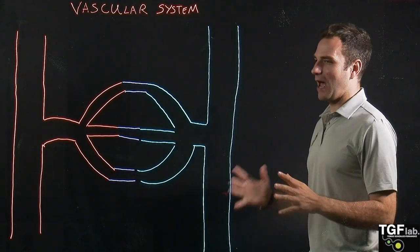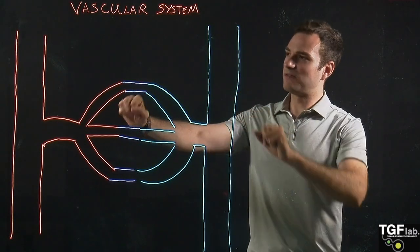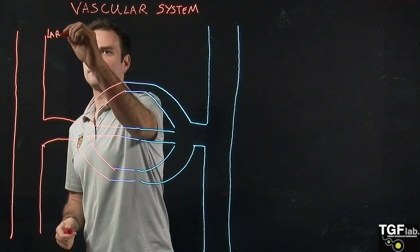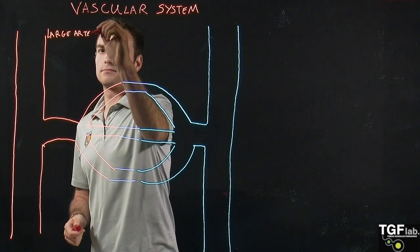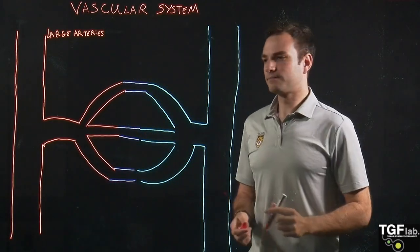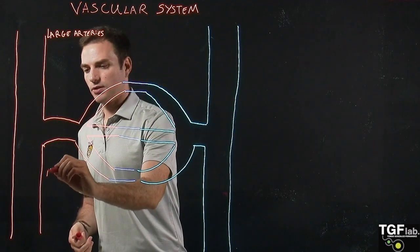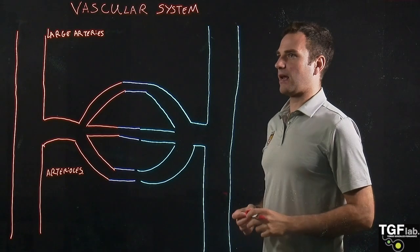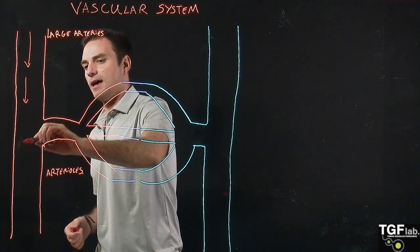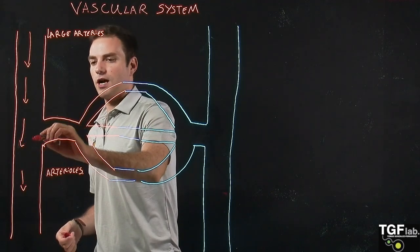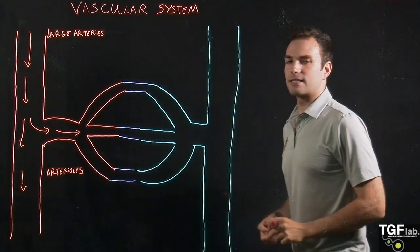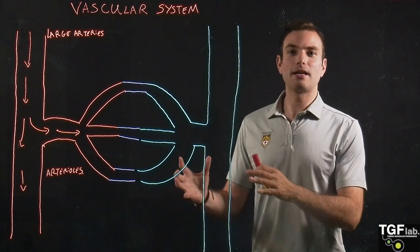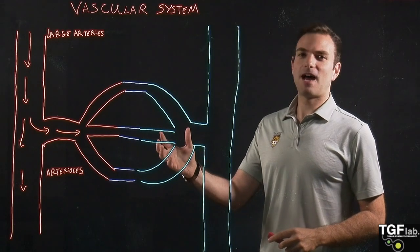In the vascular system we have different blood vessels. First, we have the arterial end. In the arterial end we have the large arteries — big arteries like the aorta — and then we also have smaller arteries that are the arterioles. The blood arrives from the heart, flows into the arteries, then into the arterioles, and then goes for gas exchange into the capillaries. The arterial branch is distinguished because the blood here is oxygenated, at 95 to 100% oxygen saturation.